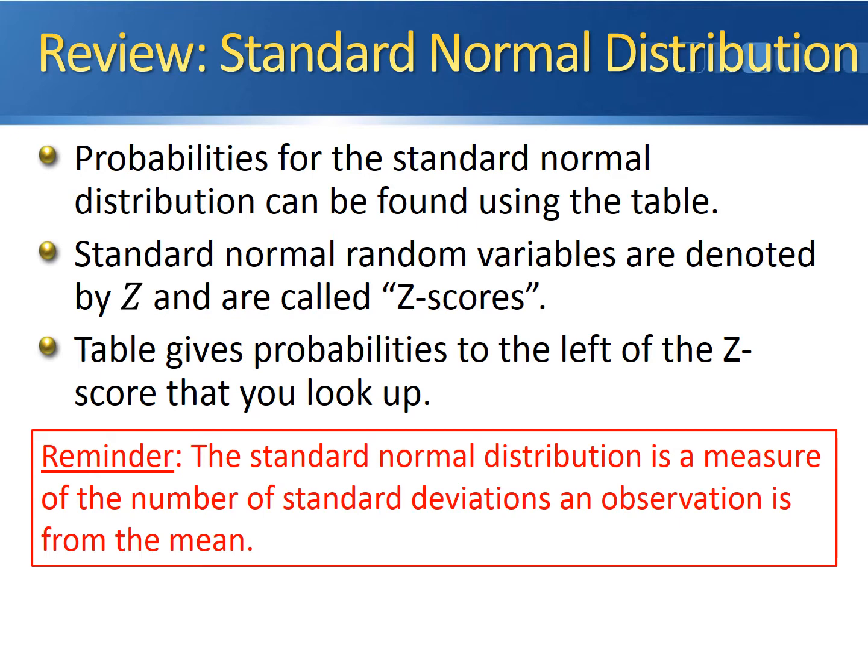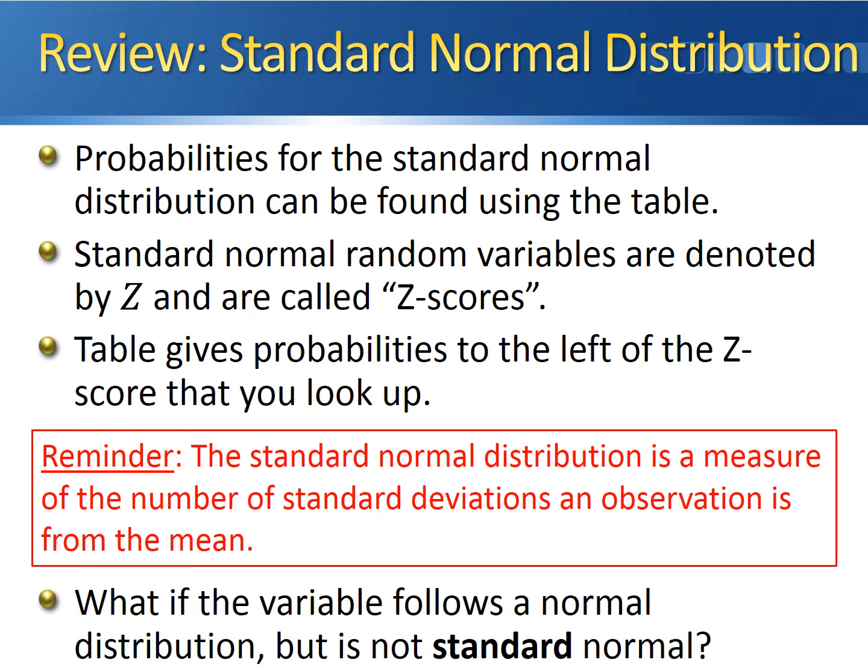Now, an important question comes up. What happens if the variable that we're working with follows a normal distribution, but it's not standard normal? Do we need a different type of table for every different normal distribution?